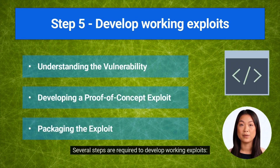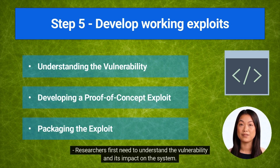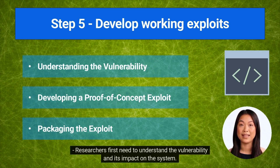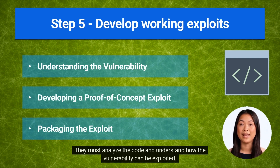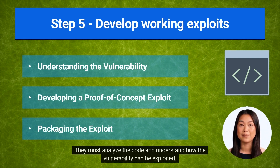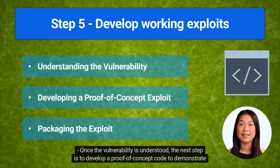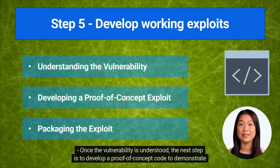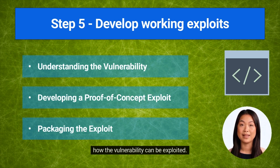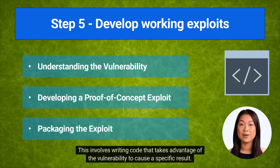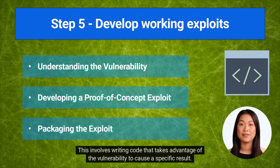Several steps are required to develop working exploits. Researchers first need to understand the vulnerability and its impact on the system. They must analyze the code and understand how the vulnerability can be exploited. Once the vulnerability is understood, the next step is to develop a proof-of-concept code to demonstrate how the vulnerability can be exploited.